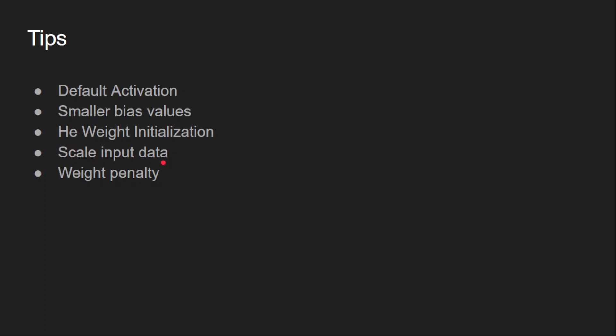And the next thing is scaling your data. This is a good practice irrespective of what activation function you are using. Before providing the input to the network, you actually scale it. This typically involves normalizing the inputs to have zero mean and unit variance. And the final tip is weight penalty. This is only for ReLU because if you observe, ReLU is not bounded in the positive domain. Whatever the input we pass, the same to the output if it is positive.